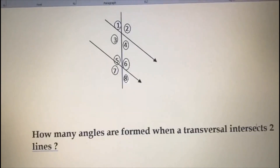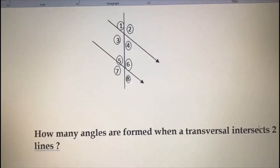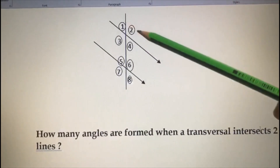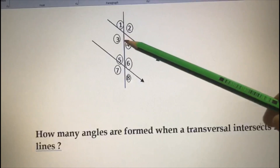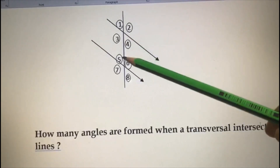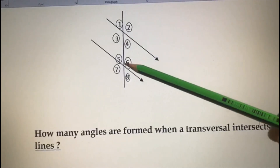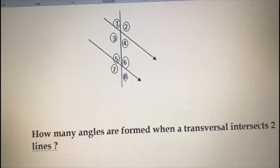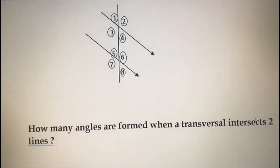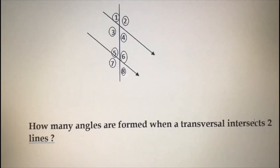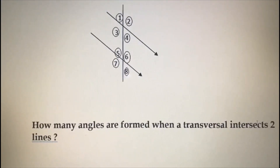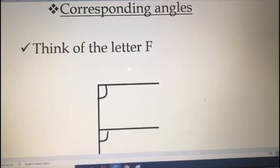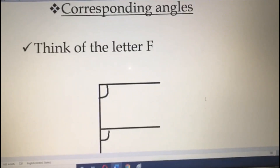So how many angles are formed when a transversal intersects two lines? See this is one angle, another one, another one, another one — these all are angles. So eight angles have been formed here.